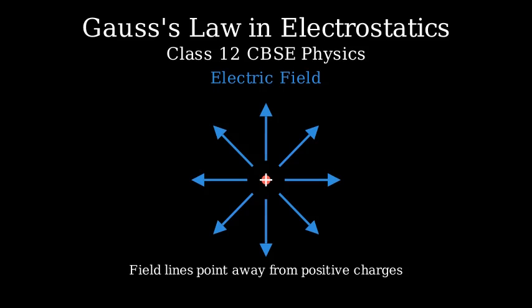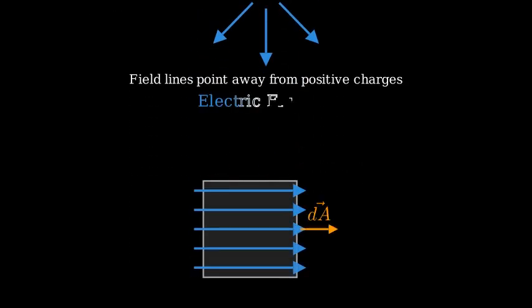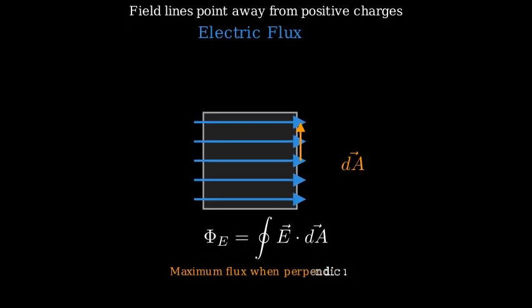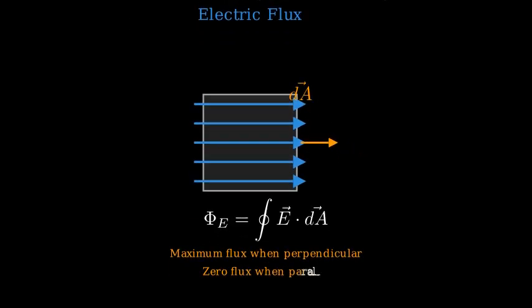Now let's introduce the concept of flux. Electric flux is a measure of how many electric field lines pass through a given surface. Mathematically, the electric flux Φ_E through a surface is given by the dot product of the electric field vector E and the area vector dA, integrated over the entire surface. Think of flux like water flowing through a surface: if the surface is perpendicular to the flow, maximum water passes through; if the surface is parallel, no water passes through. Similarly, electric flux depends on both the strength of the electric field and its orientation relative to the surface.